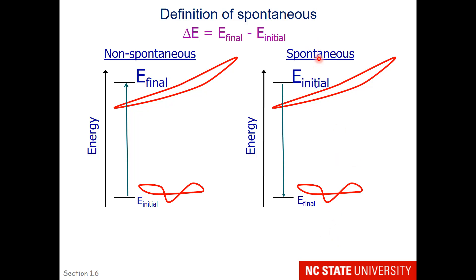Your friend shooting you with the rubber band is spontaneous — once released, it spontaneously goes to floppy. You have never seen a floppy rubber band become stretched out unless you're at Hogwarts. That is definitely a non-spontaneous reaction. Spontaneous reactions go from high initial energy to lower final energy.